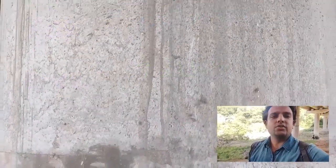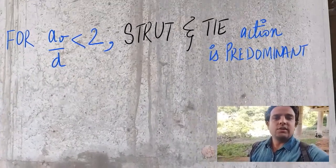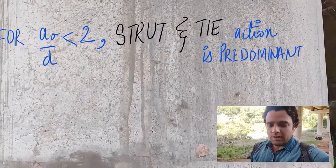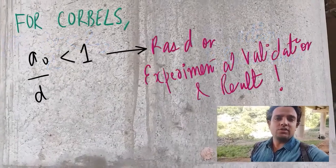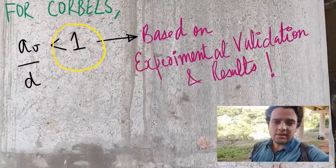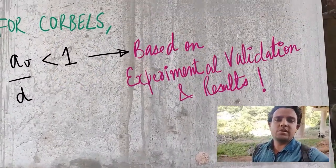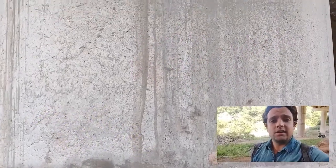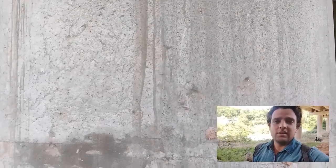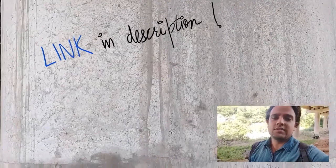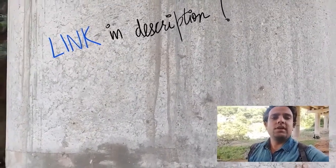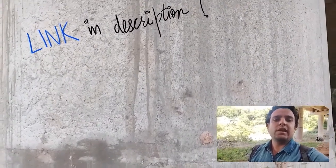But if the ratio of AV upon D — the shear span to depth ratio — is less than 2, bending action is no longer predominant; instead, strut-and-tie action will be predominant. For this structure to be classified as a corbel, the ratio AV upon D must be less than 1. This upper limit of 1 is used across different codes — IS456, IRC112, ACI318, and British standards — and all these formulas are experimentally validated. Research papers are linked in the description for those who want to explore further.